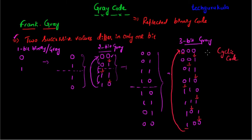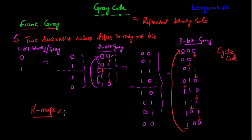So you can call them grey codes, reflected binary codes, or cyclic codes. As for applications, grey codes were originally used to prevent spurious outputs from electromechanical switches. Today they are used in error corrections and in digital communications such as cable TV and digital terrestrial television. In our course, we will also use grey codes in K-maps — Karnaugh maps — which is a very important topic for reducing logical functions.